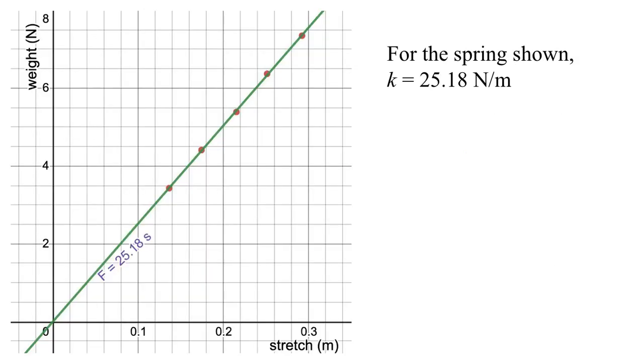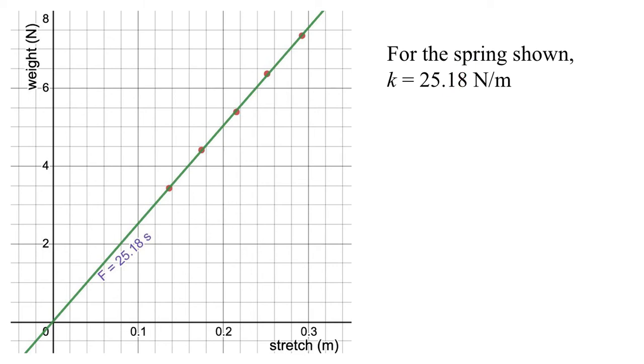Here we've got, this is actually data from the lab at the first of the year. I just grabbed somebody's file and massaged it into the right form, and we can see we have the weight over here versus the stretch over here, and Desmos tells us that this line is given by f equals 25.18s, and so therefore k must be 25.18 N per meter, which is good because this was the red spring, which Pasco tells us has a value of 25 N per meter. They say plus or minus 5%, but we got pretty well in there.